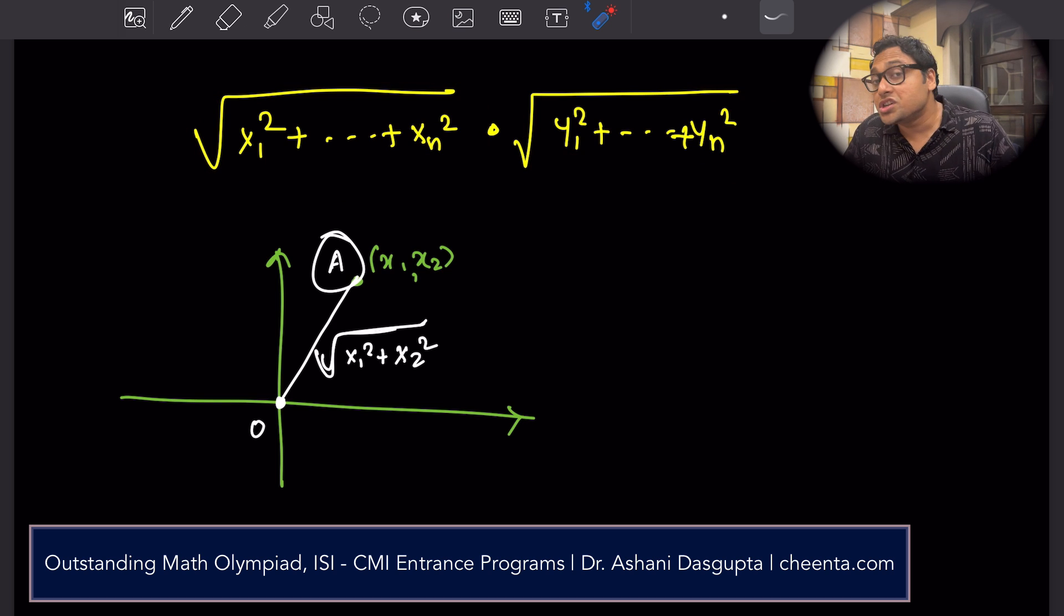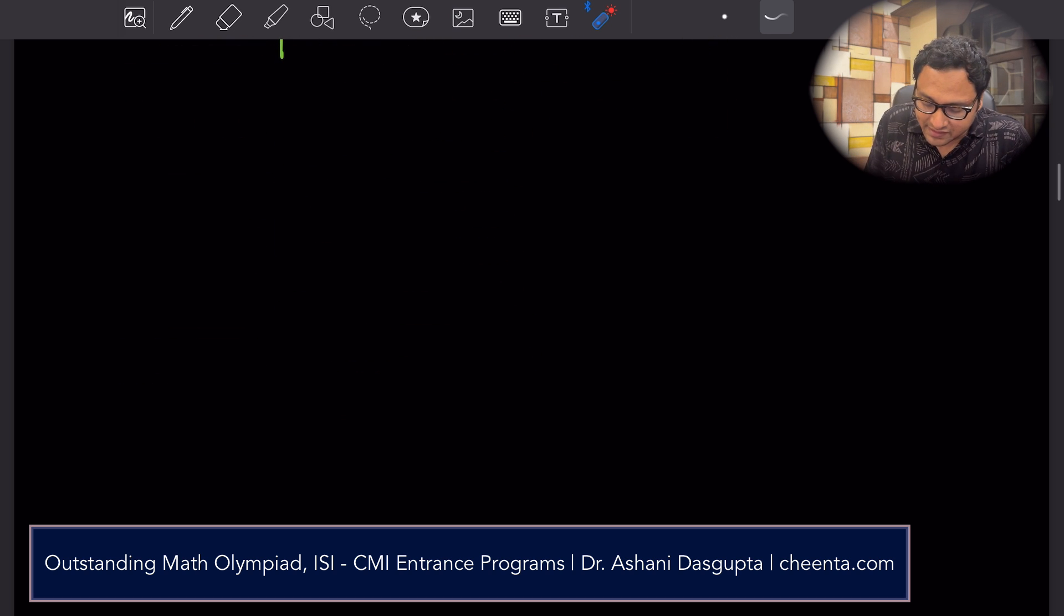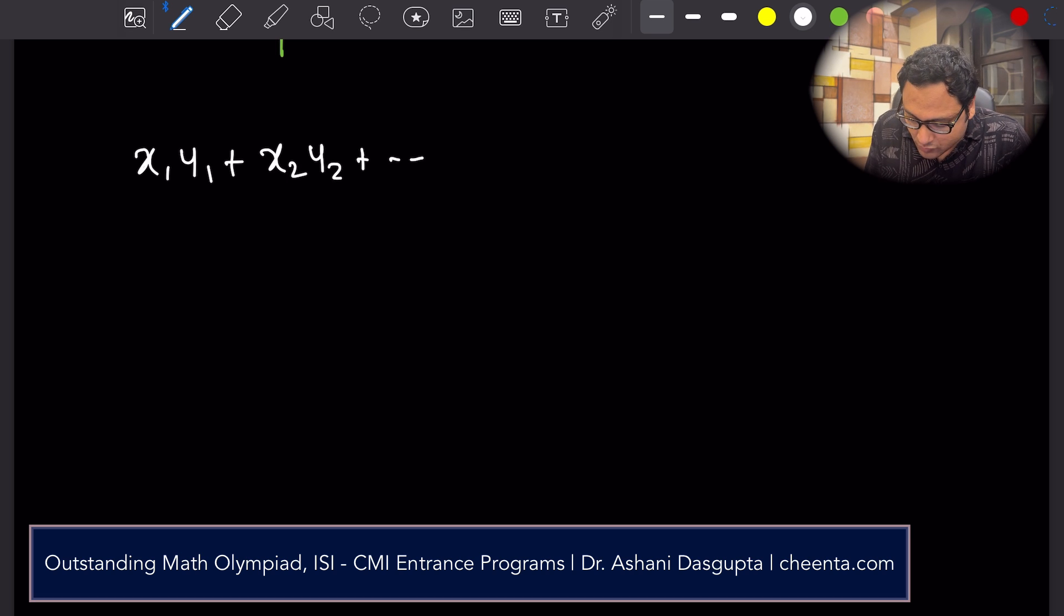What the Cauchy-Schwarz inequality says is the dot product of the two points is always less than or equal to product of the magnitudes. If I write it down, it will simply be x1, y1, x2, y2 up to xn, yn